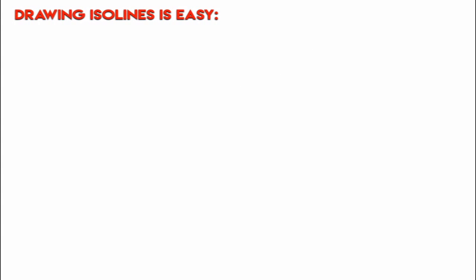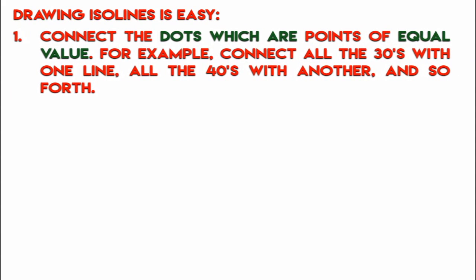Now drawing isolines is easy. There are five steps that we'll follow. The first one is to connect dots, which are points of equal value. For example, connect all the 30s with one line, connect all the 40s with one line, and so on and so forth.